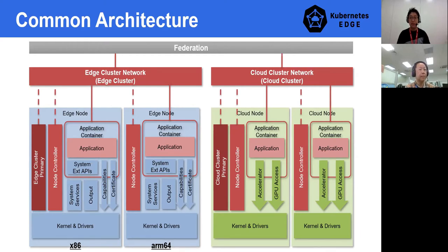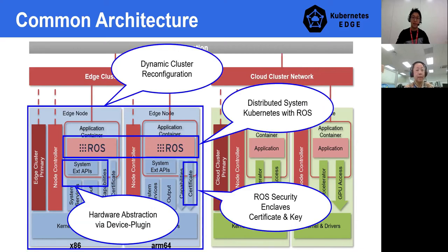From the next slide, Feng will be taking over the presentation to explain more details about edge-specific use cases and what we have done with Kubernetes. We have shared enough about overviews and requirements, so let's talk about more details. We are going to cover four main subjects: dynamic cluster reconfiguration for edge IoT devices, distributed system and application with ROS, dynamic security enclave attachment with ROS, and hardware abstraction with the Kubernetes device plug-in interface and implementation.